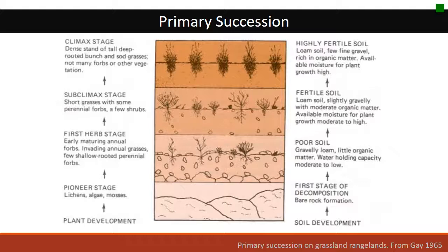Over many, many decades, the rocky soil is converted to a rich, dark organic matter-rich soil — what would be a mollisol. Then we get to the late seral stage, the potential natural community or climax stage, where you have dense stands of deep-rooted grasses and some forbs and maybe even some shrubs, depending on what the community is capable of producing. At that point, you also have highly fertile soil. So the point is that soils and plants are moving along in concert as you go from bare rock to that final potential natural community.